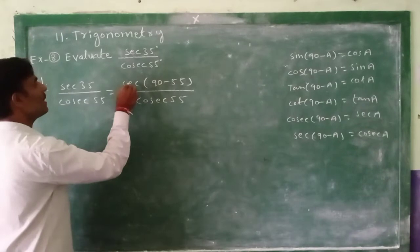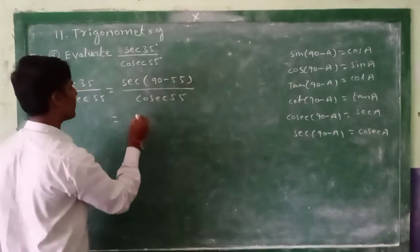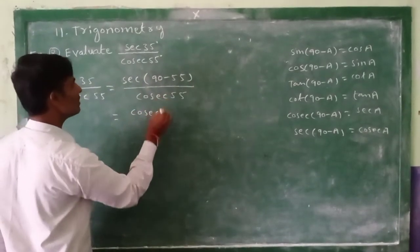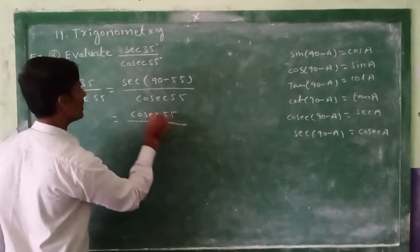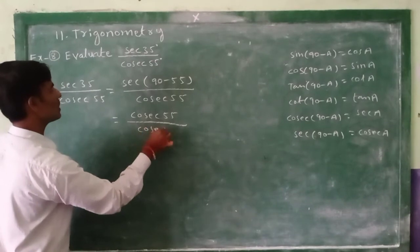So instead of secant(90-55), we have to write cosecant 55 divided by cosecant 55.